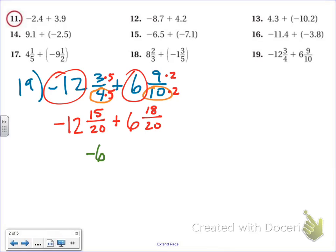And then, when we do the fractions, we have to remember that the negative belongs to 15, and that the positive belongs to 18. So, it's negative 15 plus 18. Negative 15 plus 18. So different signs subtract. 18 minus 15 is 3. And it will be a positive 3, because 18 is the bigger number. So my final answer here is negative 6 and 3 twentieths.